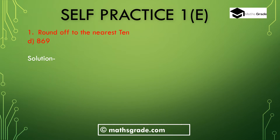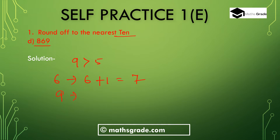Part D: round 869 to the nearest 10. The unit place digit is 9, which is more than 5. Add 1 to the 10th place digit: 6 plus 1 is 7, and 9 changes to 0. The hundreds digit 8 stays as it is. So 869 rounded to the nearest 10 is 870.